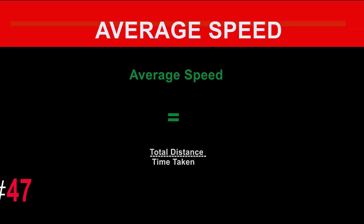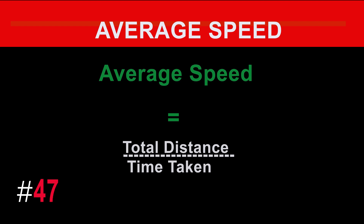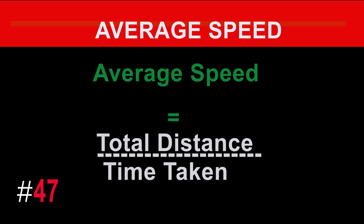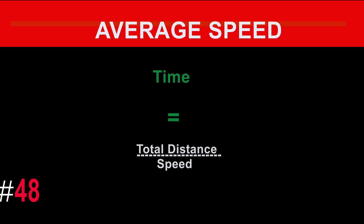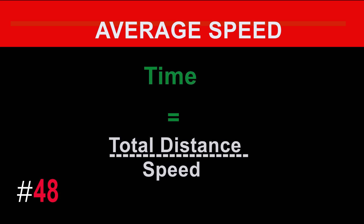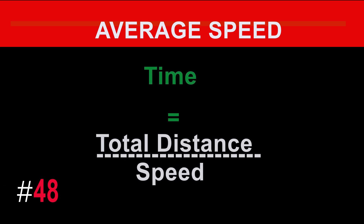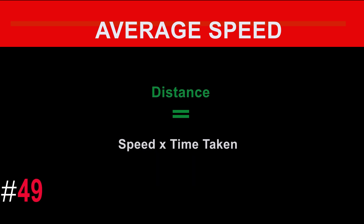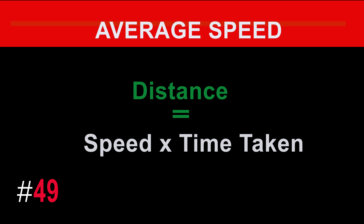The formula for speed is: speed equals total distance divided by time taken. The formula for time is: time equals total distance divided by speed. The formula for distance is: distance equals speed times time taken.